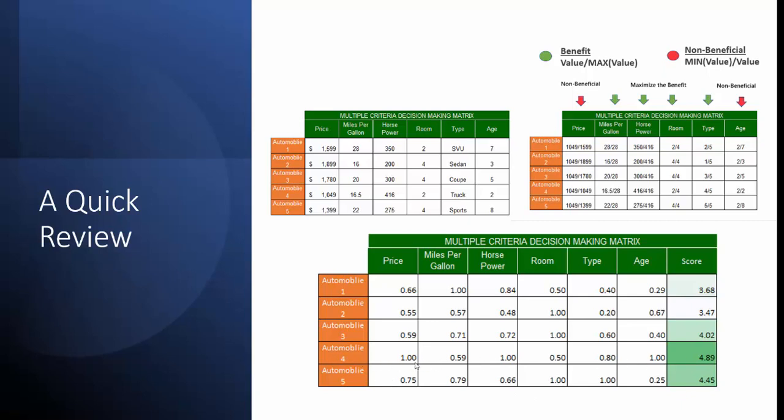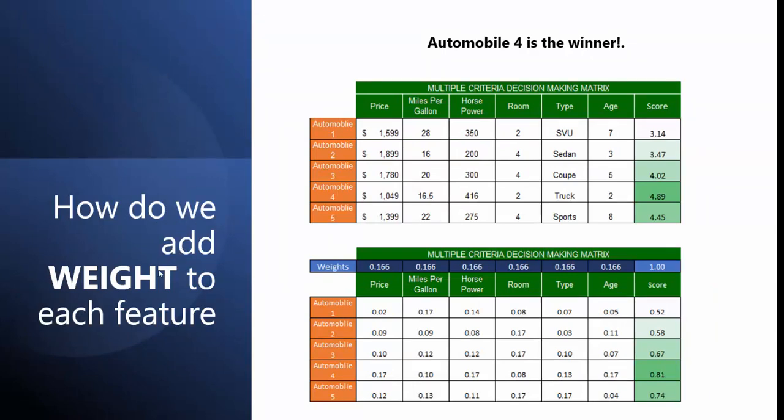So how do we add weight to each feature? Because some features are going to be more important than others. In our current model, each weight is the same because we have not indicated which feature is more important. So in that case, if we added a weight and multiplied each value by the weight, this wouldn't change the numbers, but would not change the result. So automobile four would still be the winner.